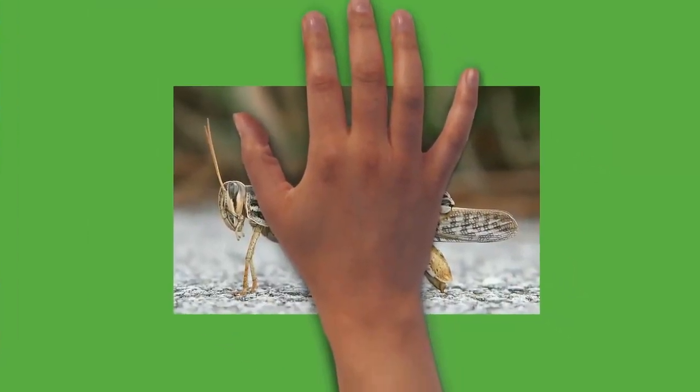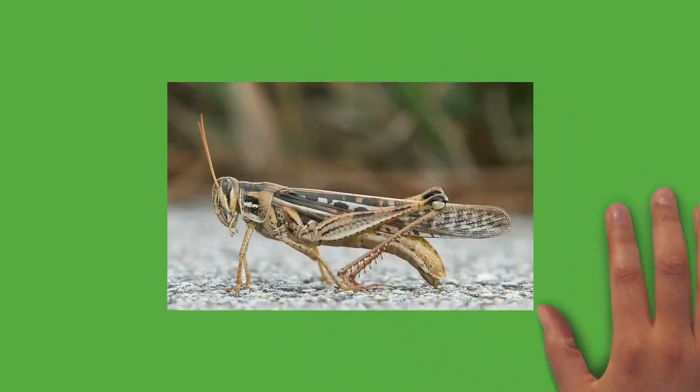Grasshoppers have had a long relationship with humans. Swarms of locusts can have devastating effects and cause famine, having done so since biblical times. Even in smaller numbers, the insects can be serious pests. They are used as food in countries such as Mexico and Indonesia. They feature in art, symbolism, and literature. The study of grasshopper species is called acridology.